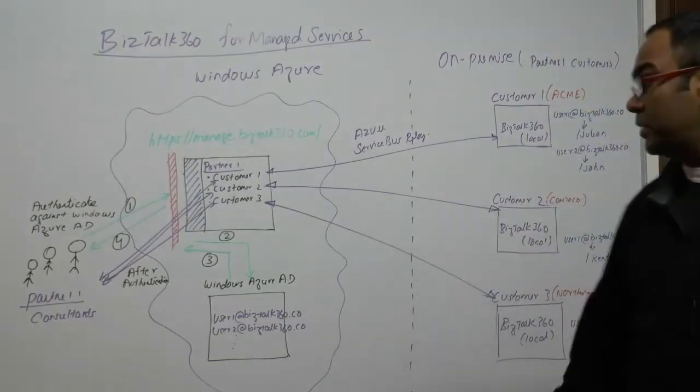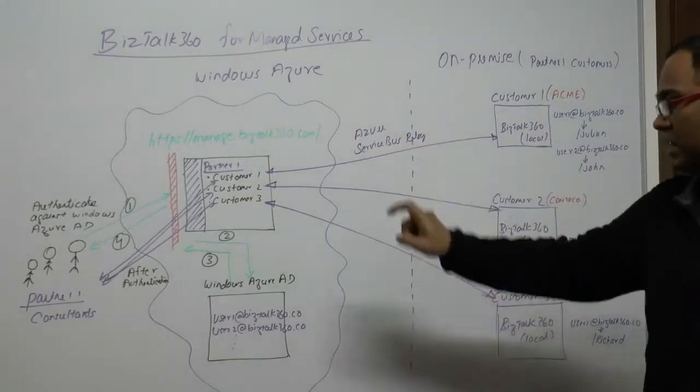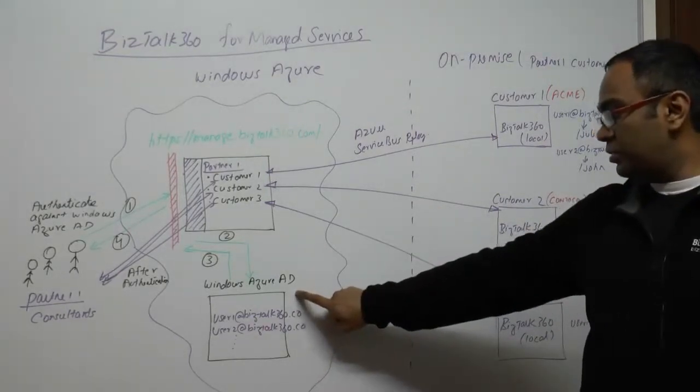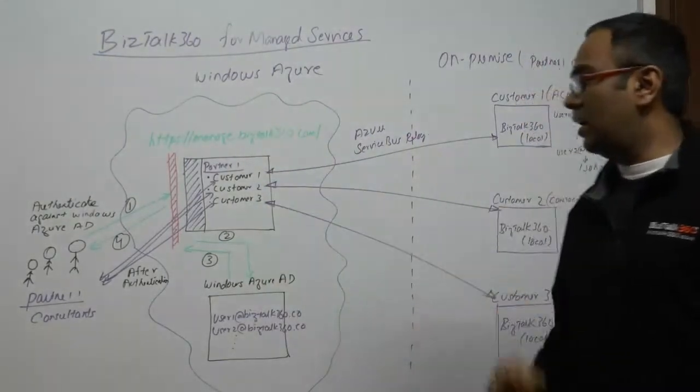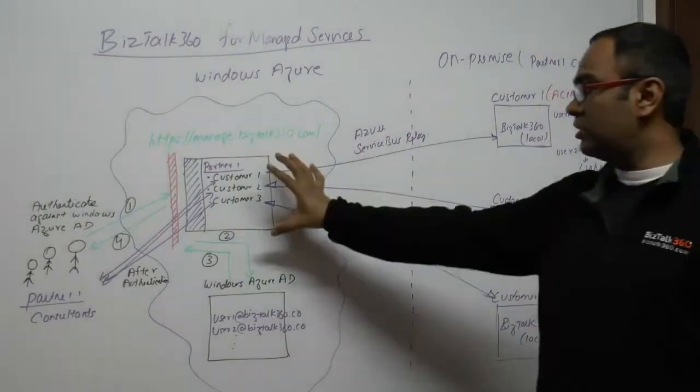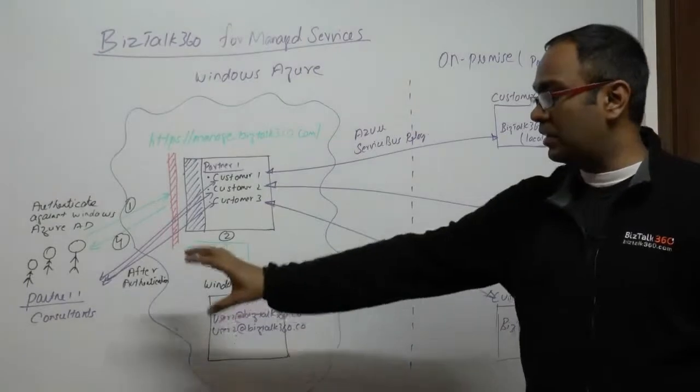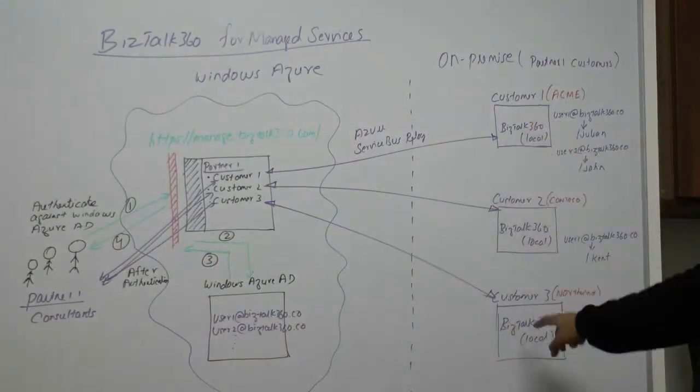What we are doing with BizTalk 360 for managed services is we are taking advantage of some of the new capabilities in Windows Azure, especially the Service Bus relay capabilities, and we are taking advantage of Windows Azure AD. We created a SaaS-based portal.